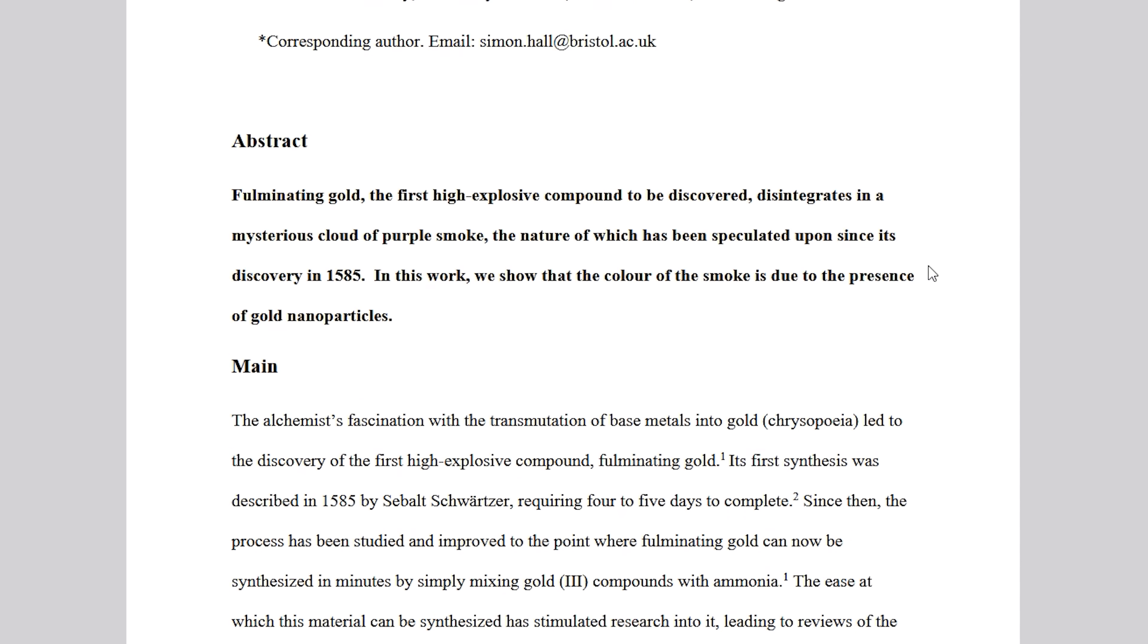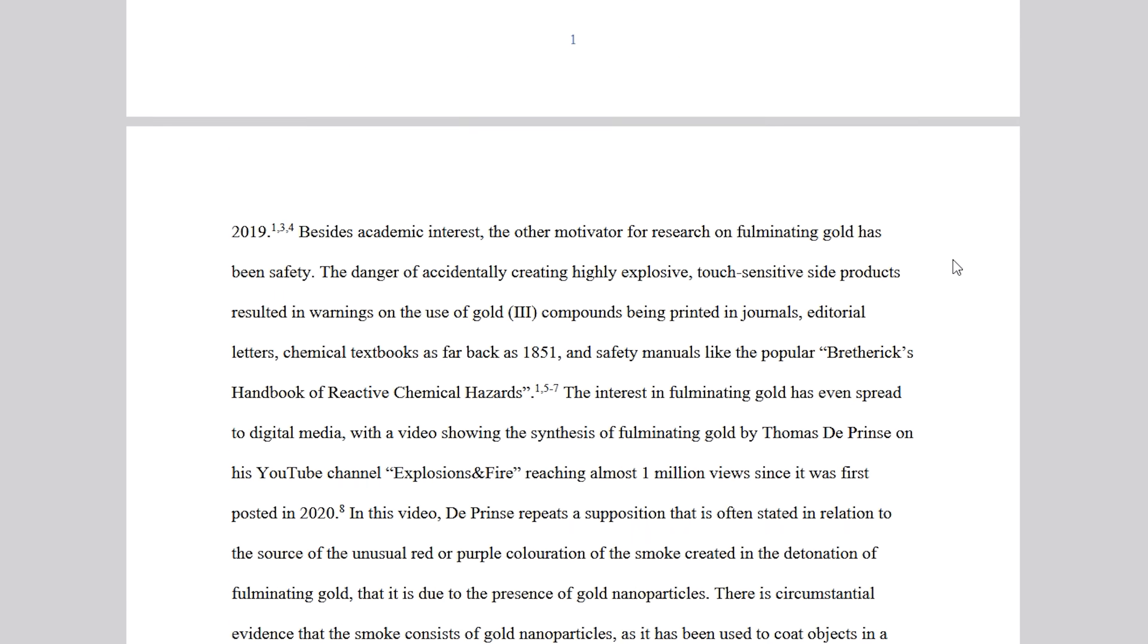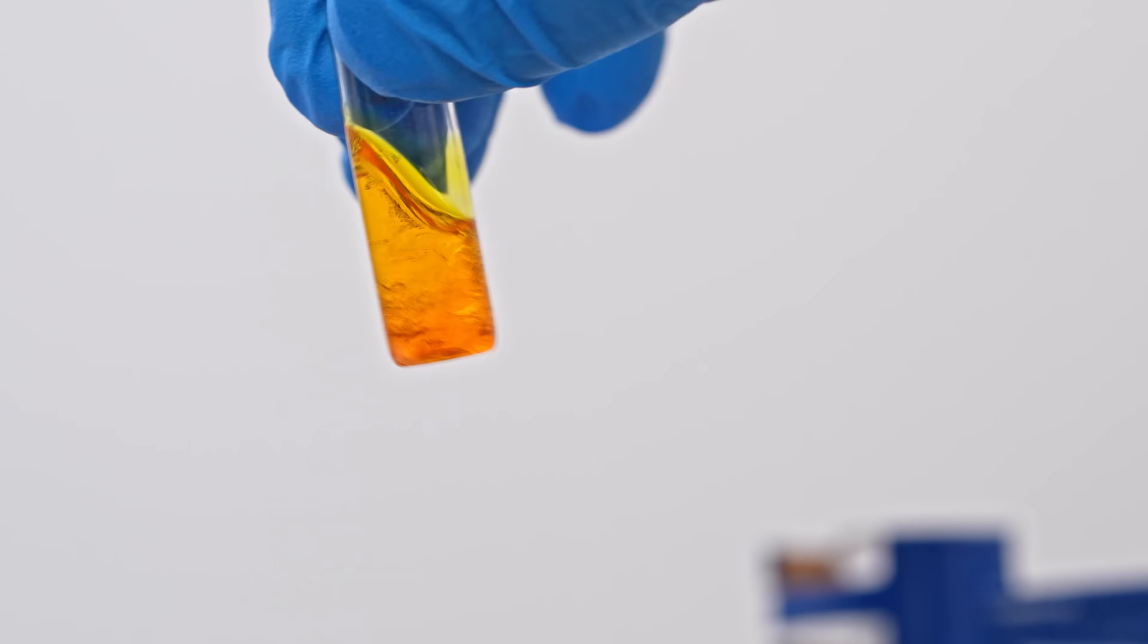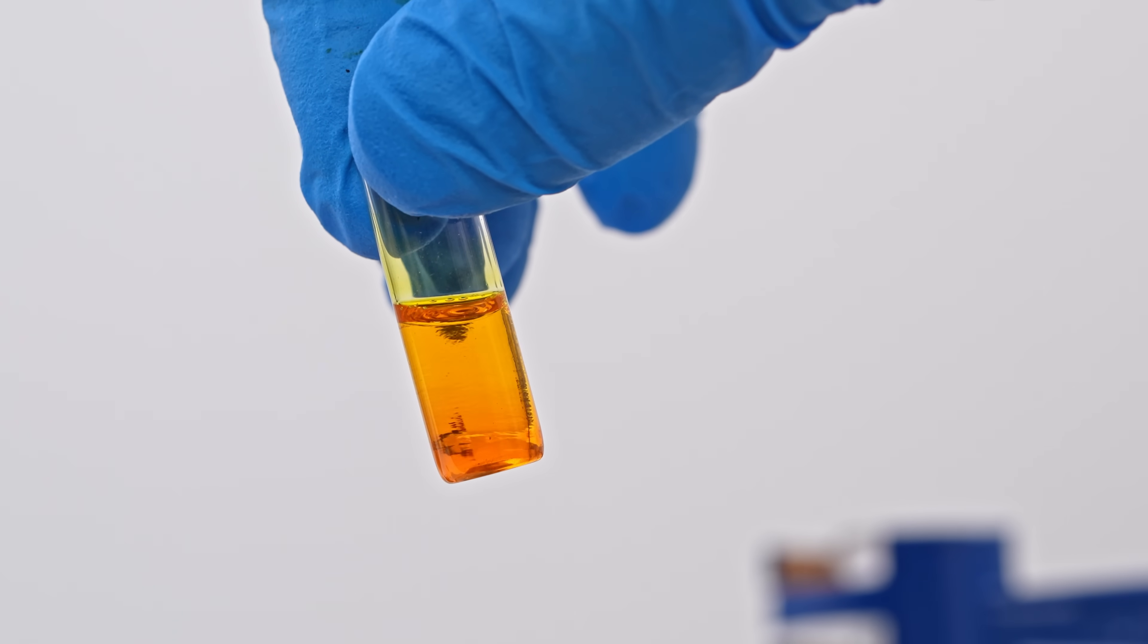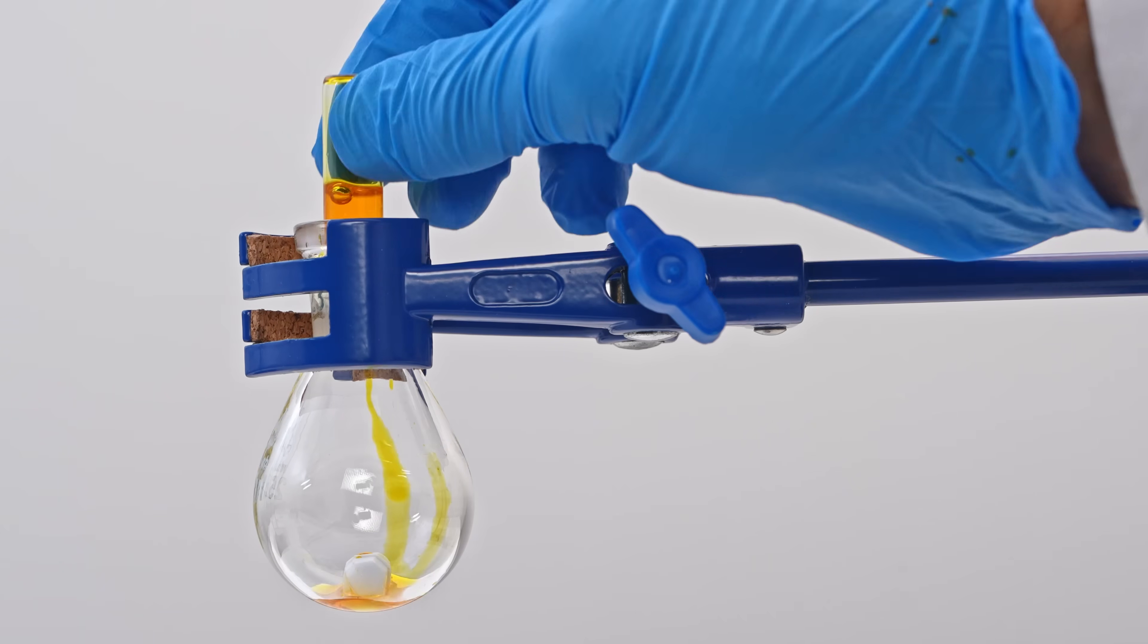A team of scientists from the University of Bristol finally uncovered the reason behind this unusual effect. Gold fulminate is obtained by adding ammonia solution to a solution of gold chloride.